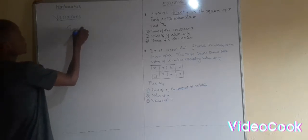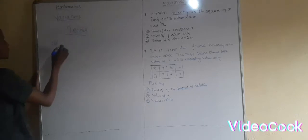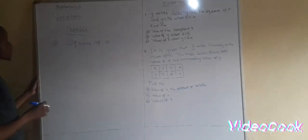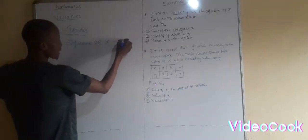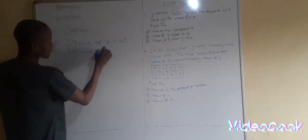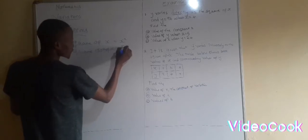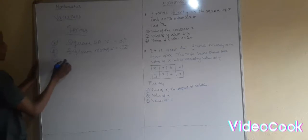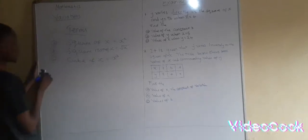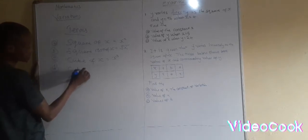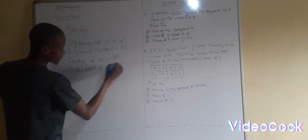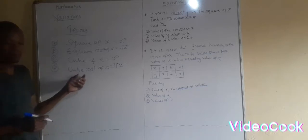The terms are: the first one, they can use the term called the square of x — that means x squared. Apart from that, we also have what is called the square root of x, which means you write x inside the square root. Three, we have the cube of x, which means x to the power three. Then again, we have the cube root of x, which means the cube root symbol with a three outside and x inside. So these terms you have to be familiar with, because they like talking about these in exam questions.